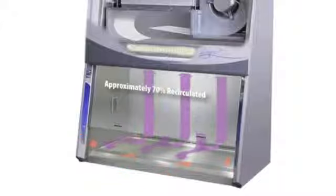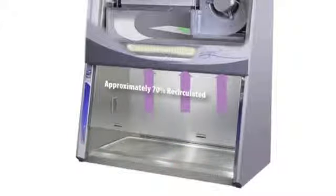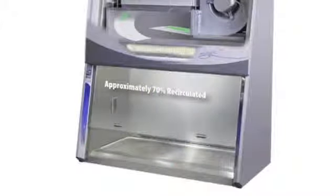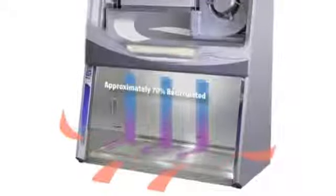This contaminated air is drawn by the blower through the back plenum of the cabinet where approximately 70% of the air is recirculated through the supply HEPA filter and back over the work area.